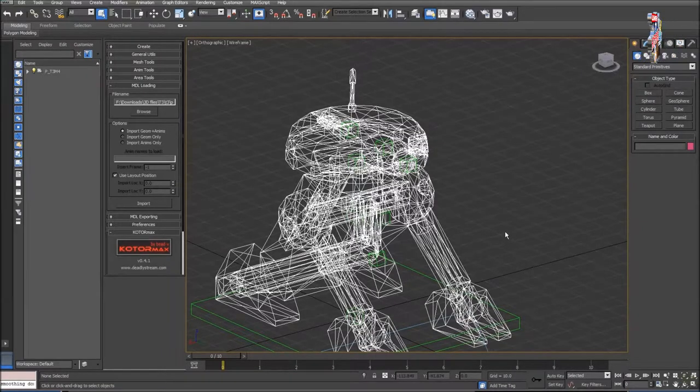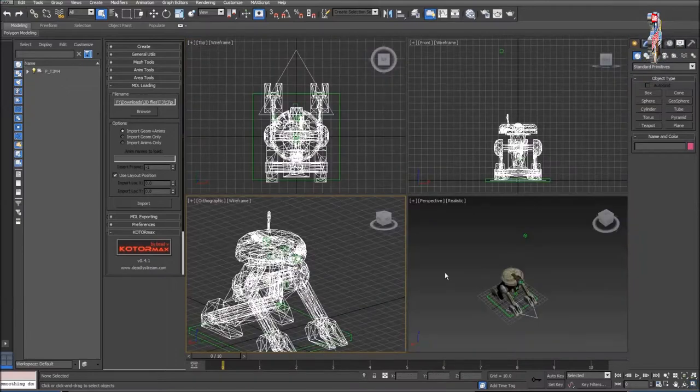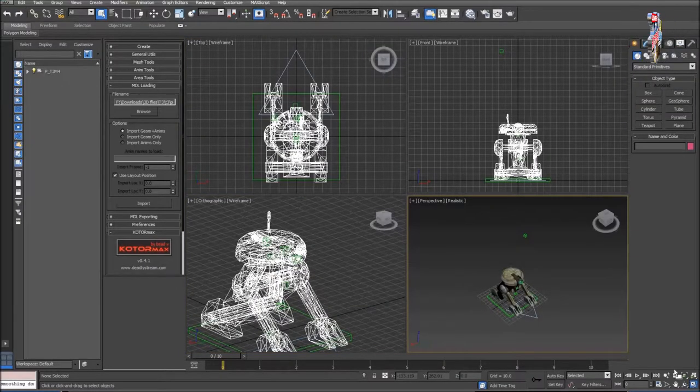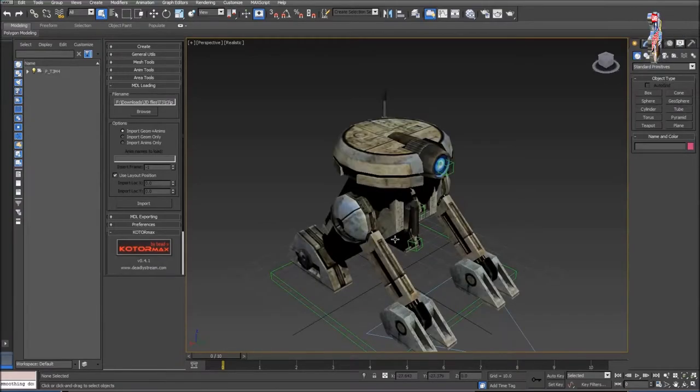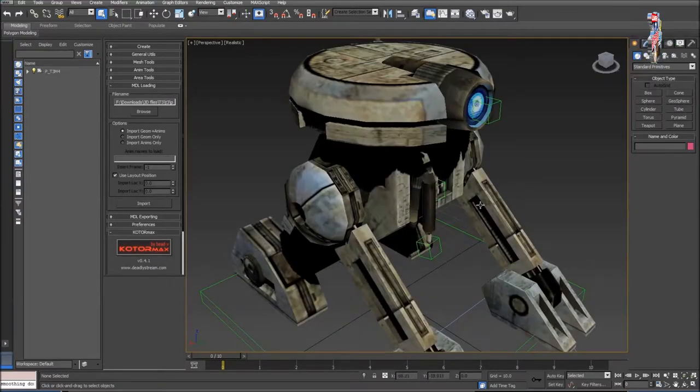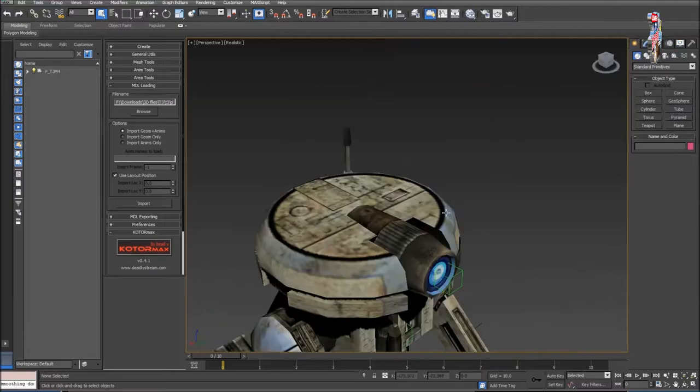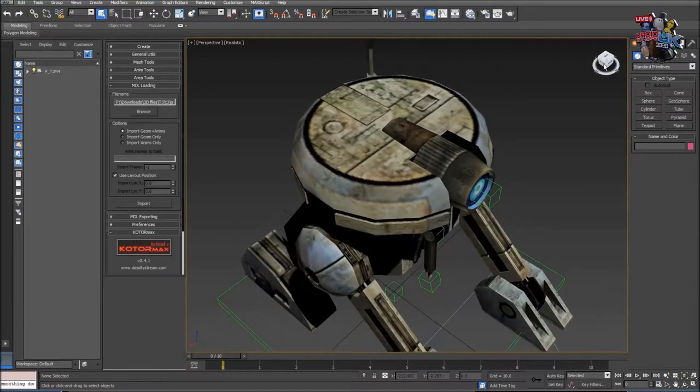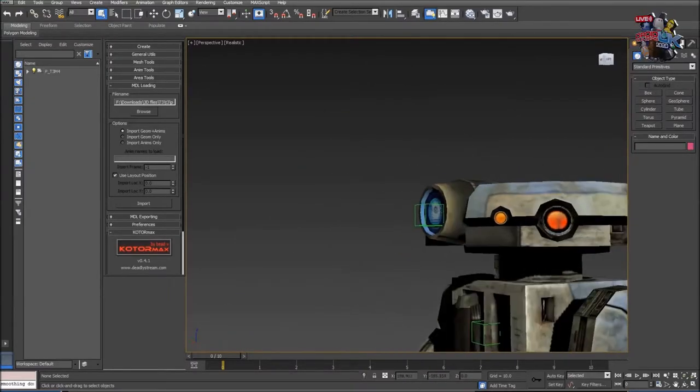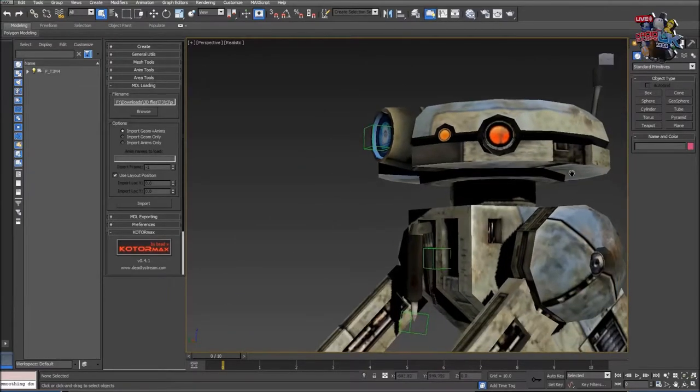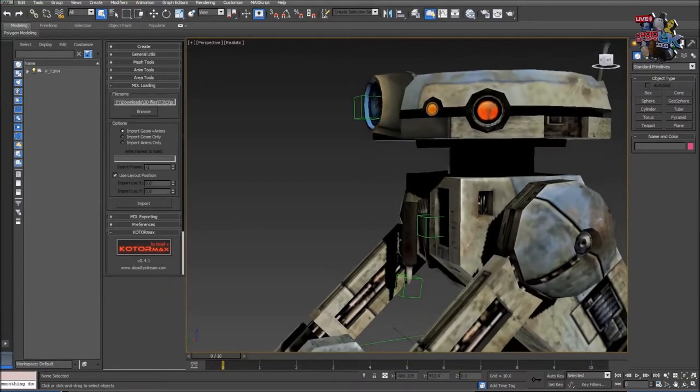Now moving over to the textured map. You can see a lot was actually done with textures to make it look detailed. So you have a head there and you have all the different panels on top. Then the eye. Side eyes. And you can see the utility arm.